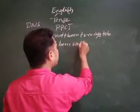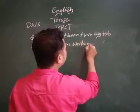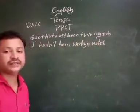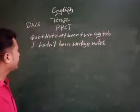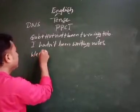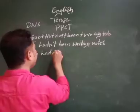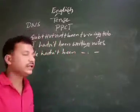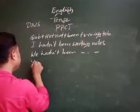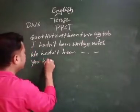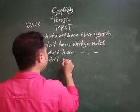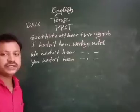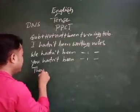As per the structure, the first subject is 'I'. The helping word is 'had'. Had plus not gives 'hadn't'. So: I hadn't been writing notes. Next: We hadn't been writing notes. Next: You hadn't been writing notes.